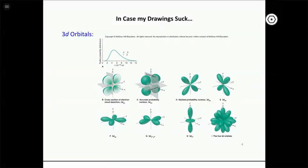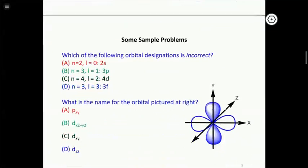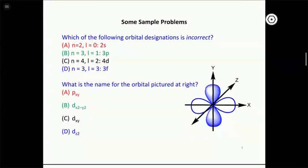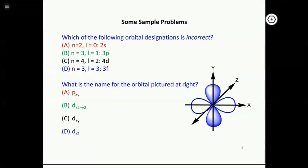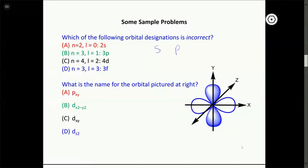Let's do a couple example problems about orbitals. This problem asks: which of the following orbital designations is incorrect? We're given pairs of quantum numbers matched with orbital types, and we need to identify which is wrong. First, check that the l values match the letter designations: l equals 0 is S, l equals 1 is P, l equals 2 is D, l equals 3 is F. Those all check out.